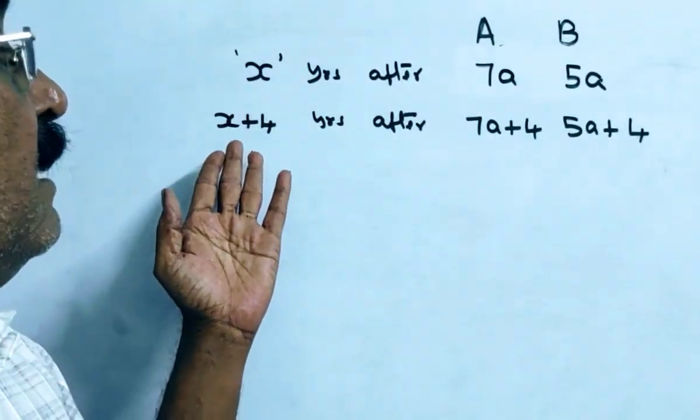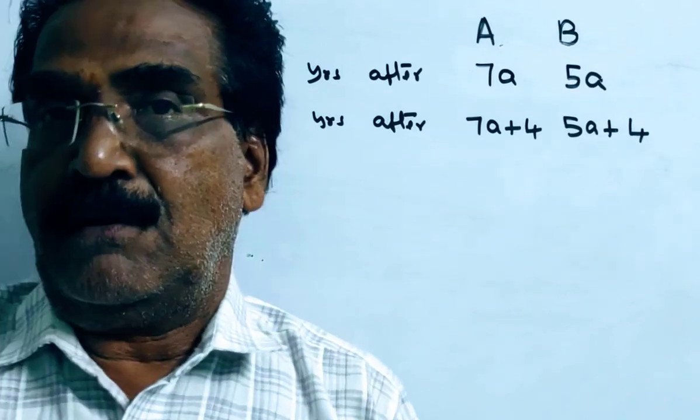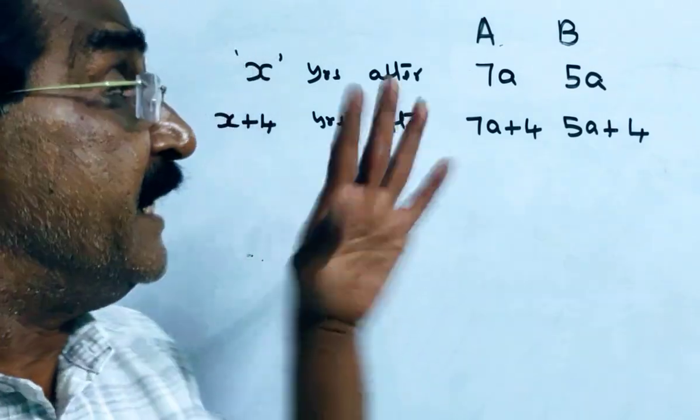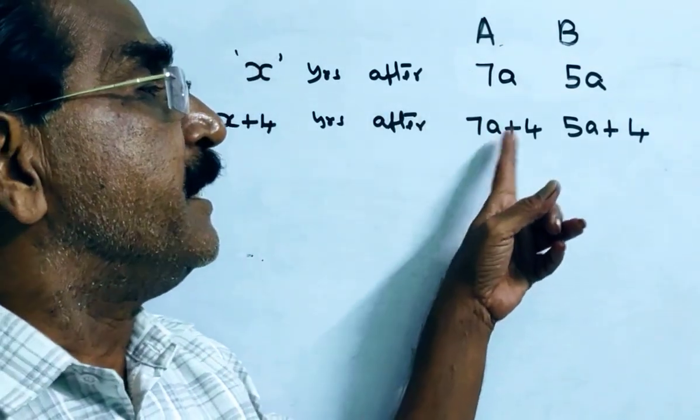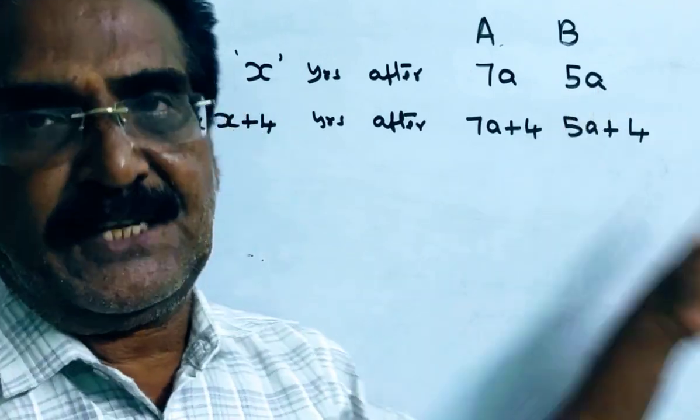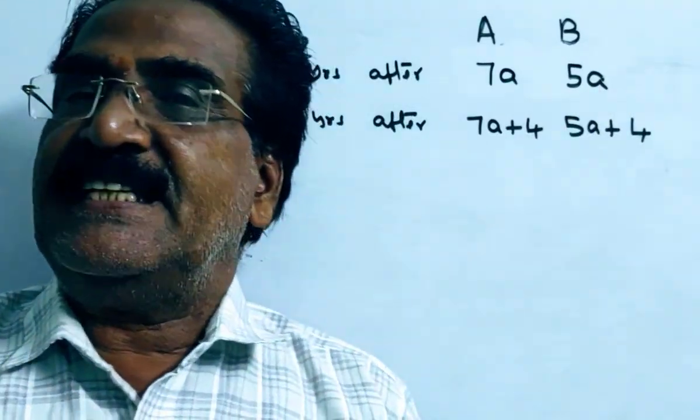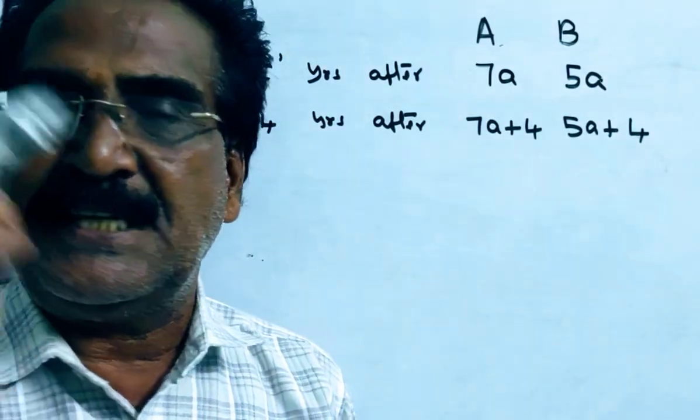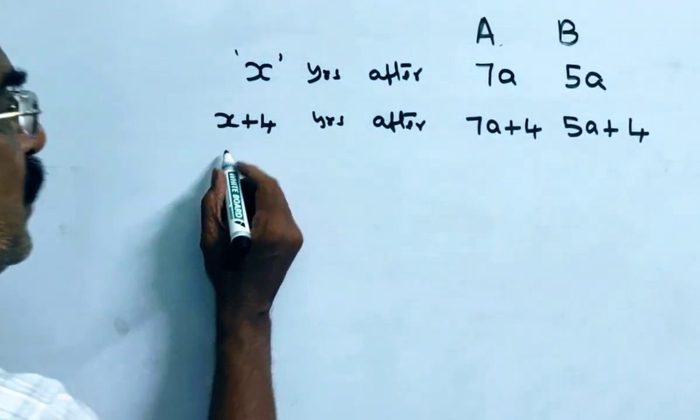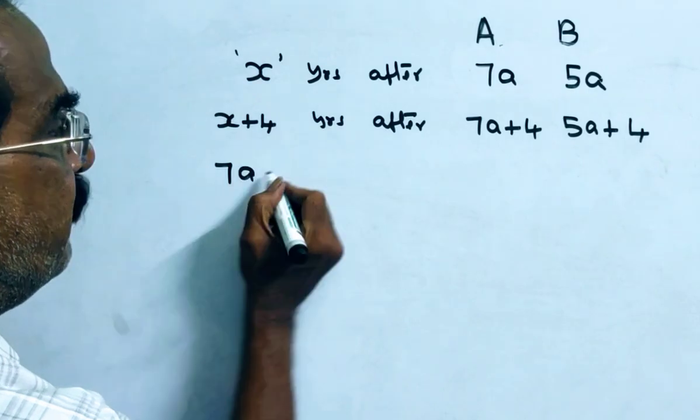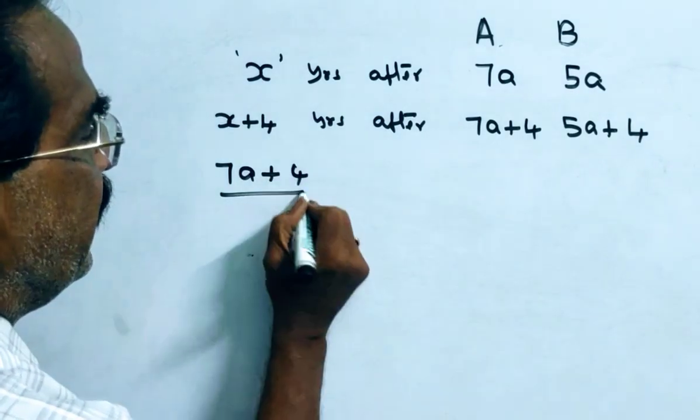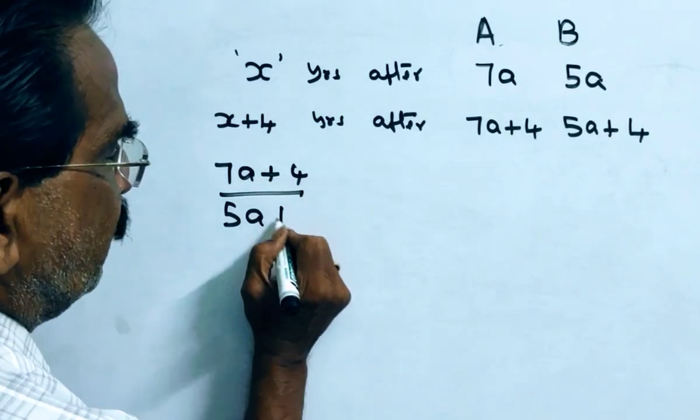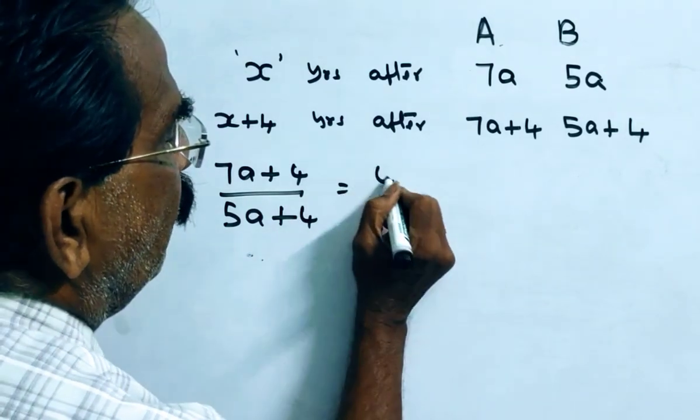Then after X plus 4 years, their ages will be 7a plus 4 and 5a plus 4. But it is given that after X plus 4 years, their ages will be in the ratio 4 to 3. So, 7a plus 4 to 5a plus 4 equals 4 to 3.